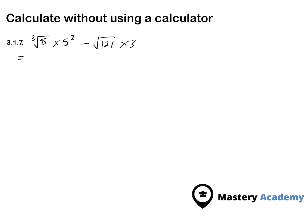So, we start off by changing this cube root into an exponential form. We are going to have 8 in brackets to the power of 1 over 3 multiplied by 5 to the power of 2 minus,